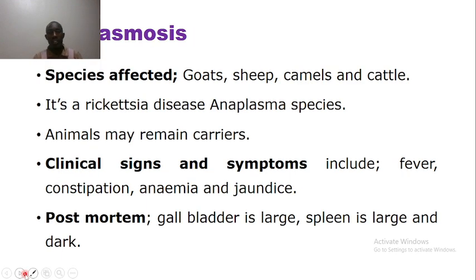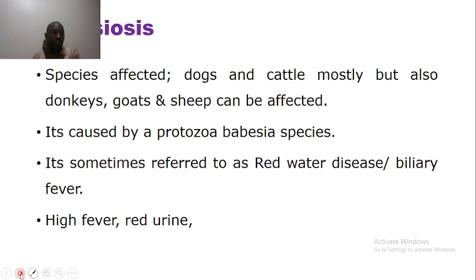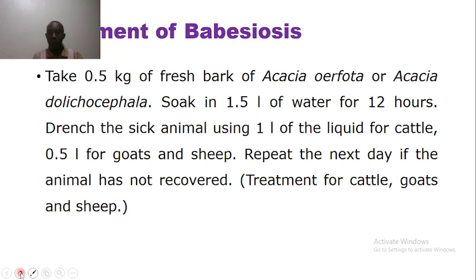Anaplasmosis is common in cattle, goats, and sheep. Signs include constipation, jaundice, and fever. It is sometimes called the gallbladder disease — on post-mortem, the gallbladder and spleen are enlarged and dark red. Another tick-borne disease is babesiosis, common in cattle and dogs, caused by the protozoa Babesia species — in cattle, Babesia bovis — characterized by red urine. Treatment uses Acacia: soak in 1.5 liters of water for 12 hours, then drench the animal and repeat the next day.